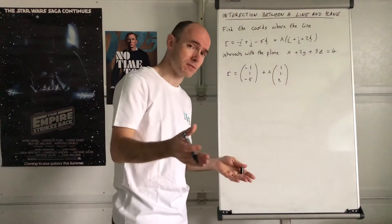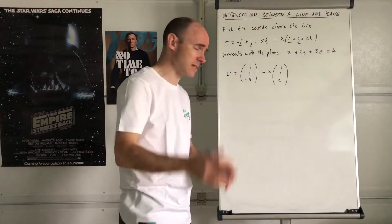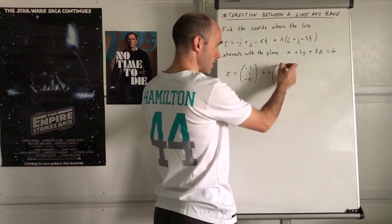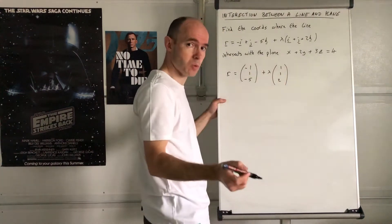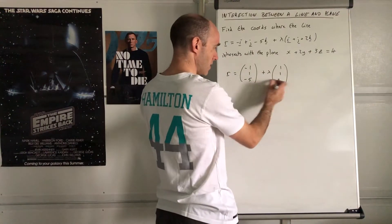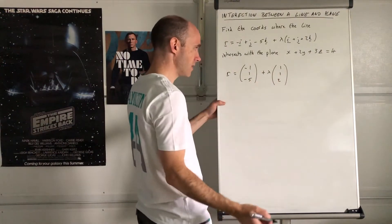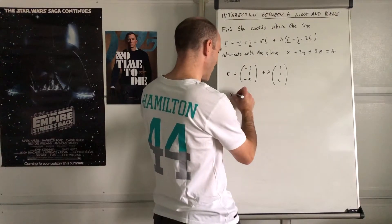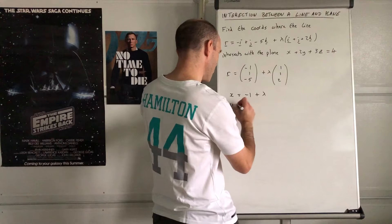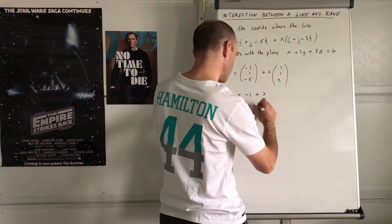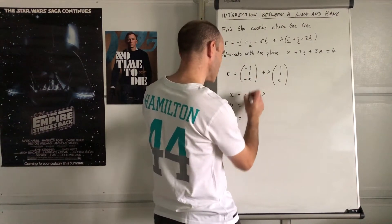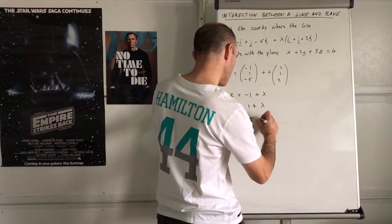Remember: when given it in this vector form, the top row is your x coordinate, the middle row is your y coordinate, and the bottom row is your z coordinate. So: x = -1 + λ, y = 1 + λ, and z = -5 + 2λ.